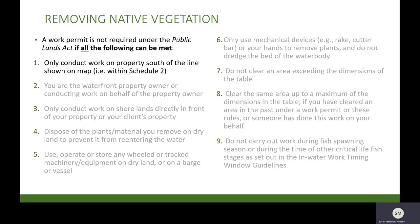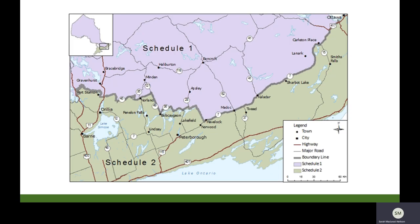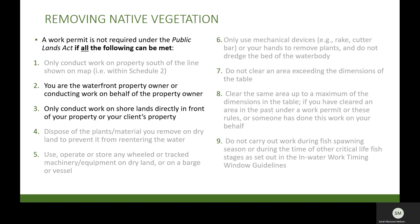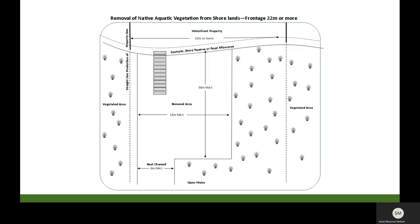In removing native vegetation, the rules are very similar to those for invasive vegetation with a few additional requirements. A work permit is not required under the Public Lands Act if all of the following can be met. Work can only be conducted on properties south of the line shown on the map as Schedule 2, shown by the grey line. Audie Lake, for example, falls within Schedule 2. Again, you must be the waterfront property owner or conducting work on behalf of the property owner, and work may only be conducted on the shorelands directly in front of your property.